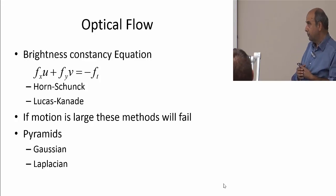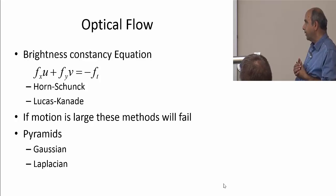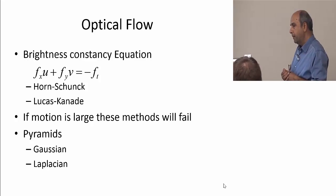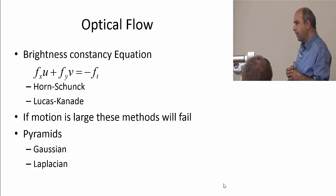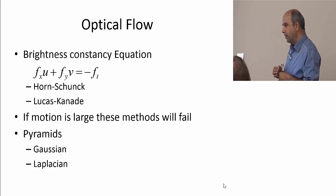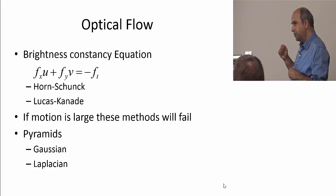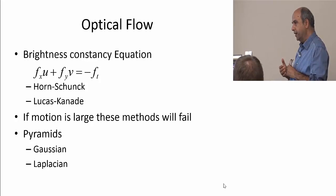To recap what we have done in optical flow: we looked at the brightness consistency equation. Given a pixel in frame one, its intensity compared to the pixel in the next frame at a slightly shifted location with small change dx and dy should be constant. Using that, we derived the equation fx*u + fy*v = -ft. We used the Horn and Schunck method, which is variational calculus — it takes all these equations for all pixels, adds a second constraint that optical flow should be smooth, and obtains an iterative algorithm to compute u and v.